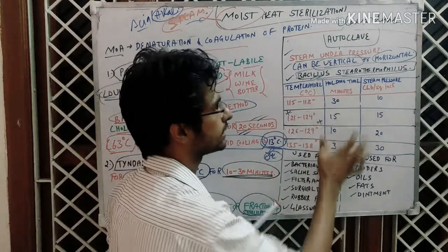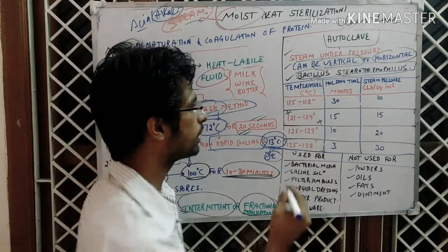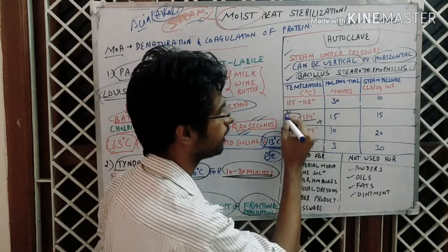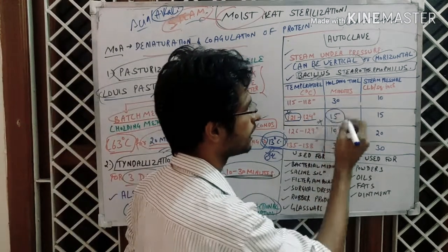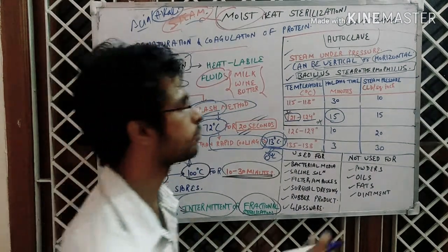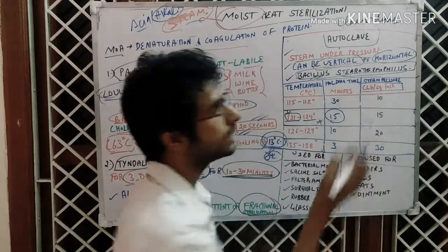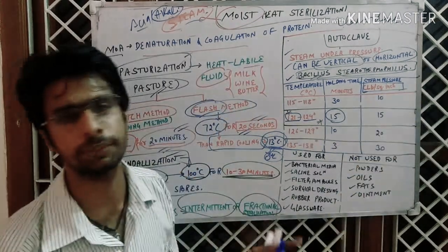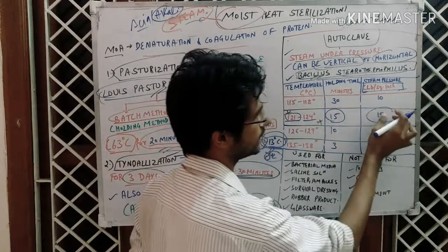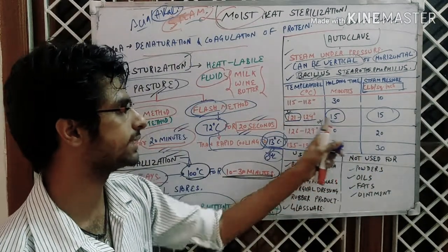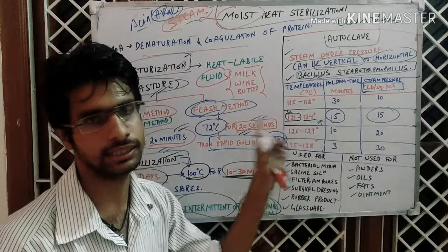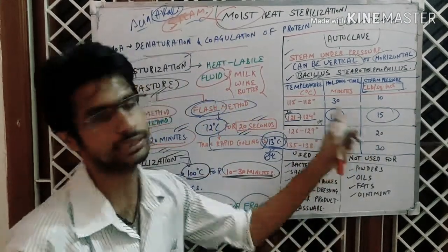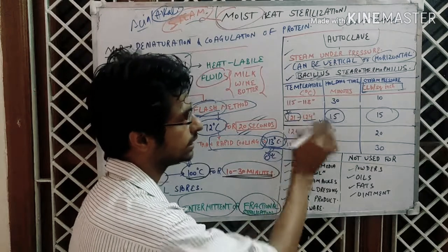There is a wide variety of temperatures that can be used in the autoclave, but the most common one is 121 to 124 degrees Celsius. In exam options you will get: 121 degrees Celsius for 15 minutes, with steam pressure as an important parameter. The unit is lb per square inch — lb stands for pound. At 15 lb per square inch pressure, 121 degrees Celsius for 15 minutes is the most common condition.